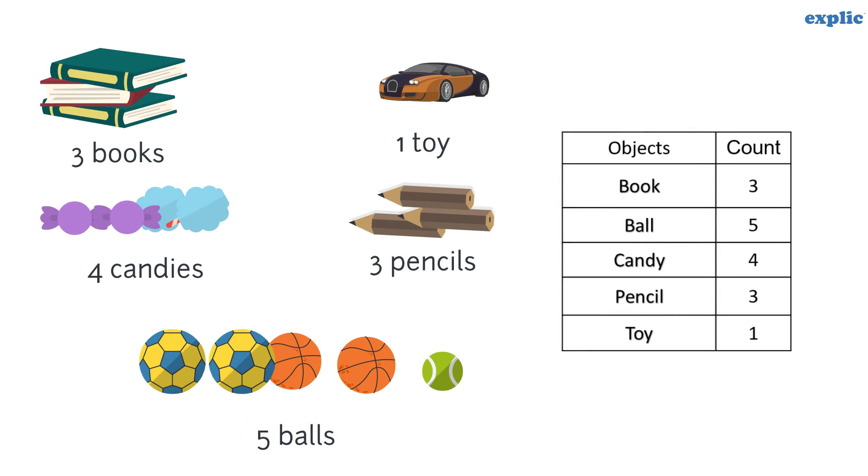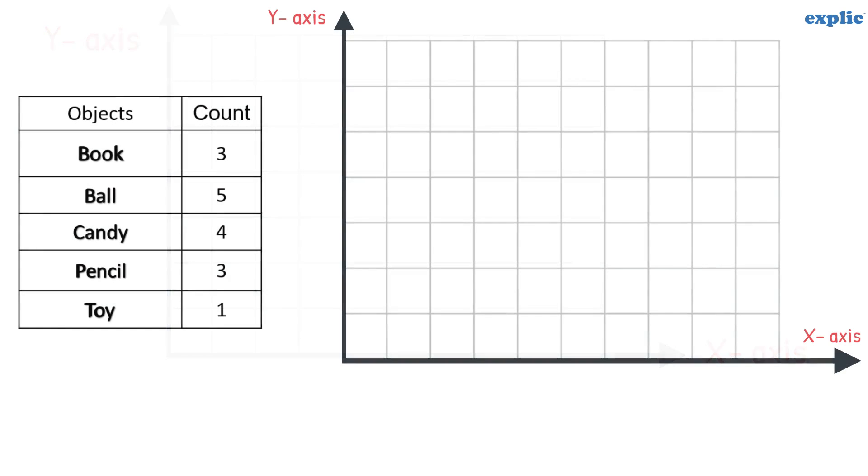Let's take a simple example of data and draw a bar graph. Take a square paper or graph paper and draw the x-axis and y-axis. Write the name of the objects on the alternate blocks of the x-axis. Write the numbers on the y-axis at an equal interval, starting from 0 to the maximum count of the data, which is 5.